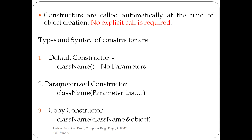The parameterized constructor is used to initialize a particular data member of a class through the constructor. A copy constructor is used if you want to initialize a particular object with an existing object. We will see each one of these types.